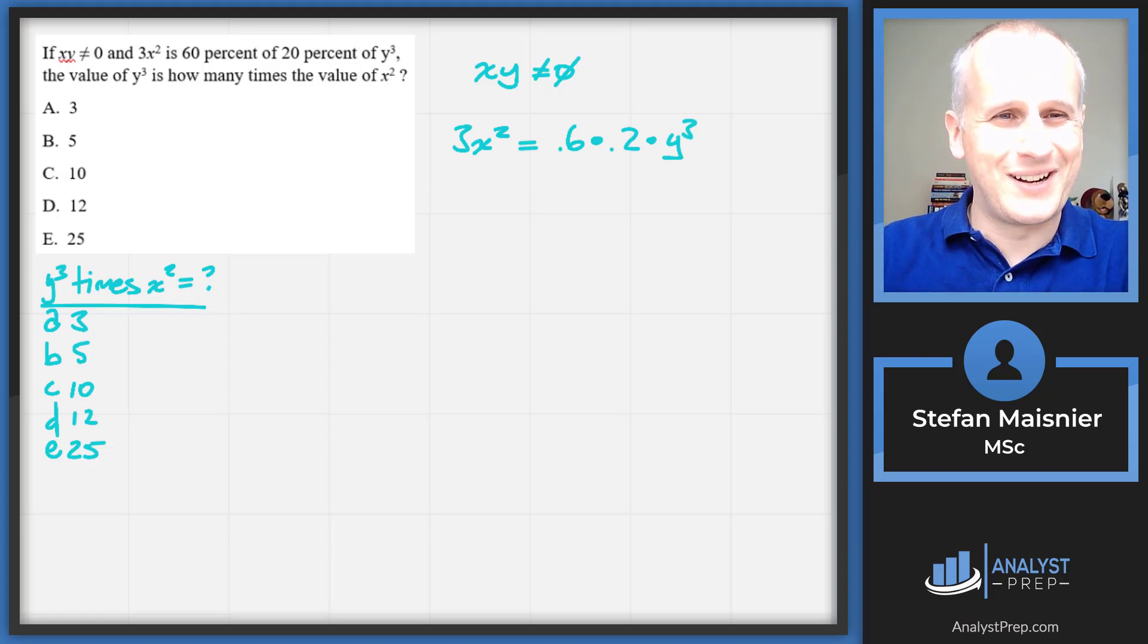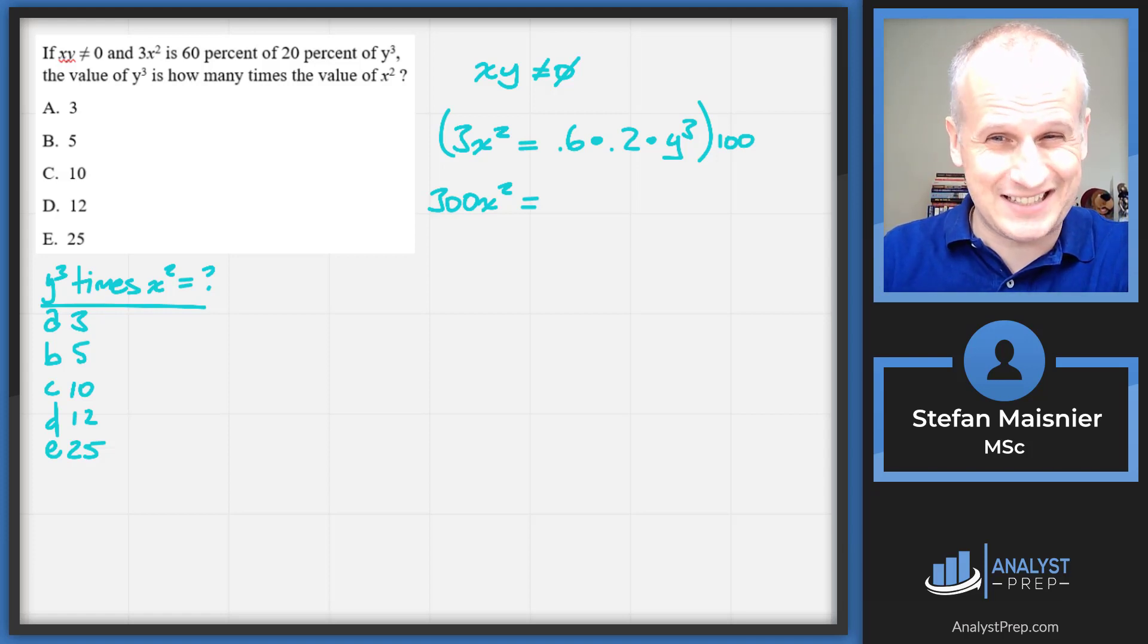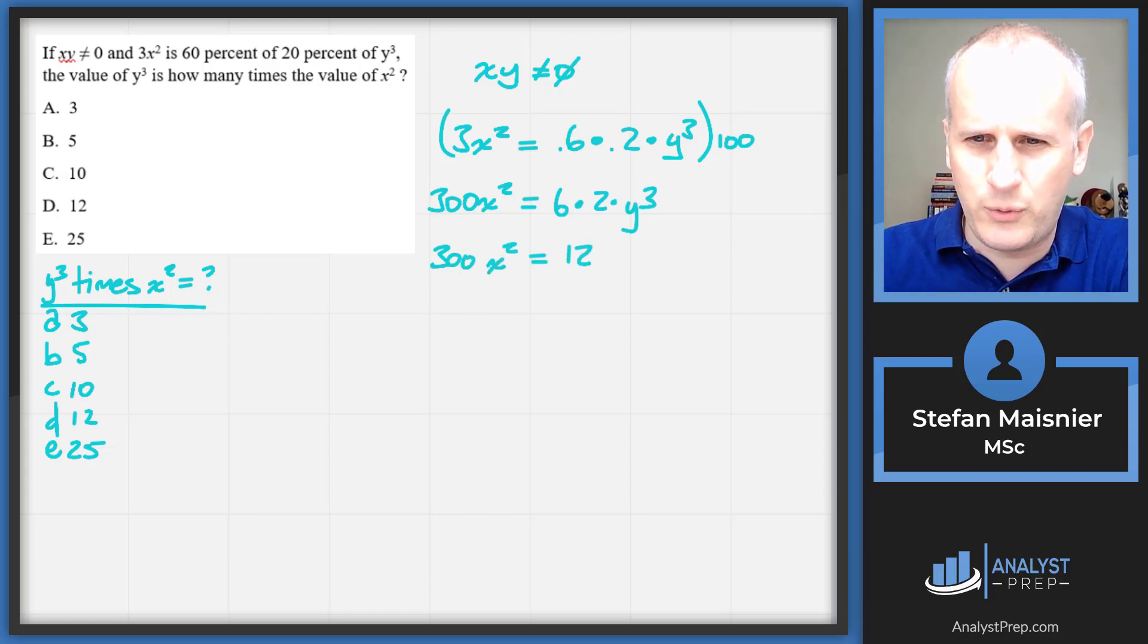Now, we want to get rid of those decimals first. They're just making this math harder than we need. So we'll do that by multiplying the whole equation by 100. So that gets us 300x squared is equal to, well, I'm going to have to multiply by 100 because I've got to get rid of both of those points. So we'll have 300 here, because remember, you've got to distribute your multiplication. So we multiply by 100, we get 300x squared is now equal to 6 times 2 times y cubed. So 300x squared is now equal to 12y cubed.